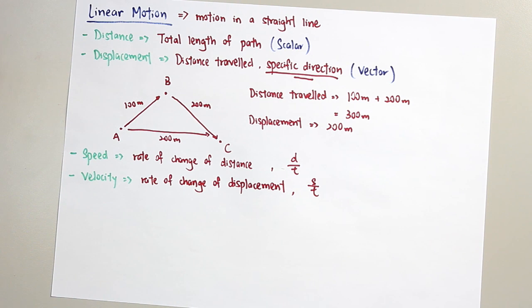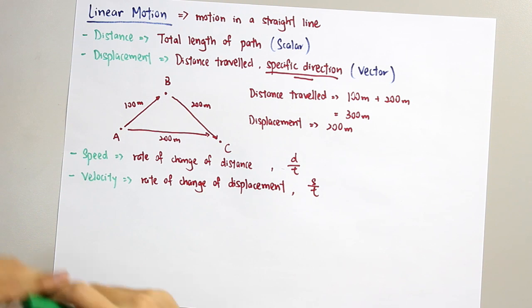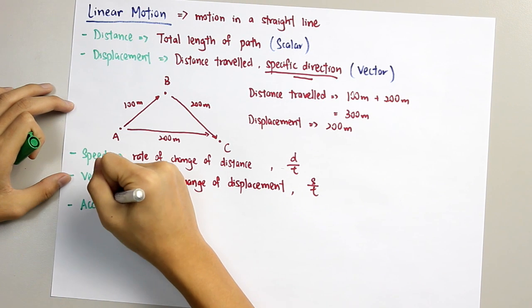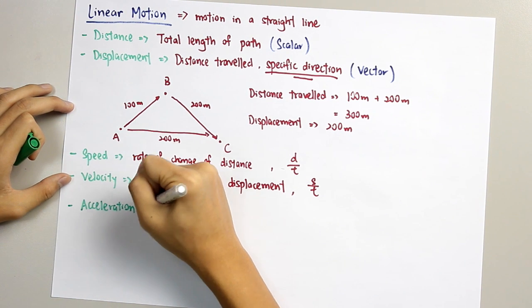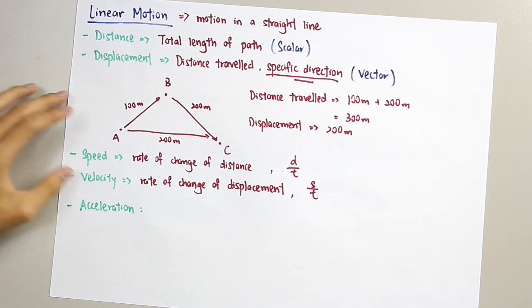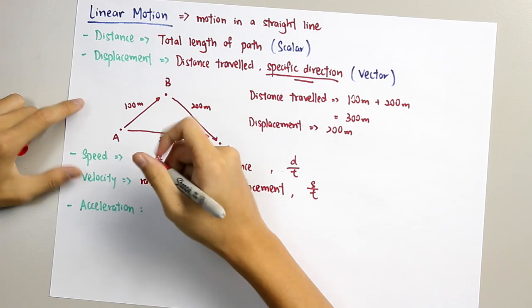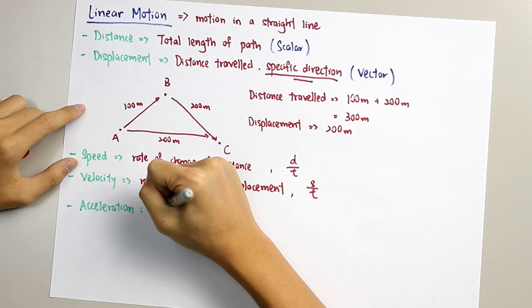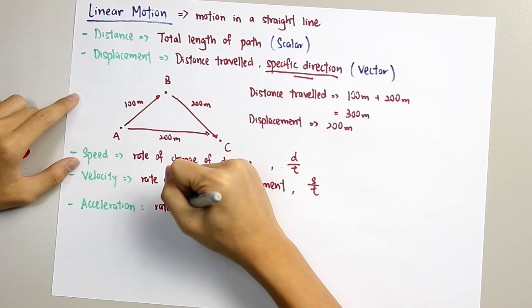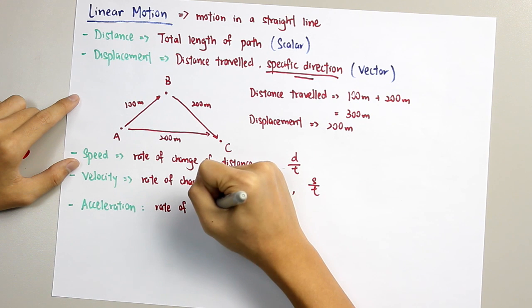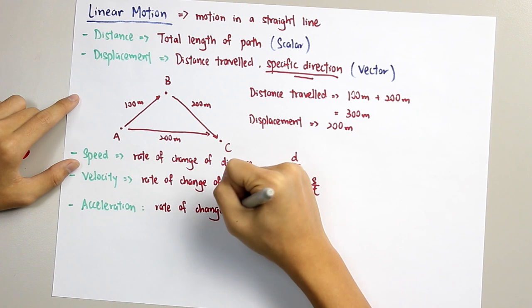So next, what is acceleration? We know that when a car is going faster and faster, the car experiences acceleration. Therefore, we give the definition of acceleration as rate of change of velocity.